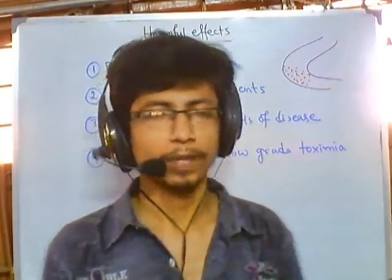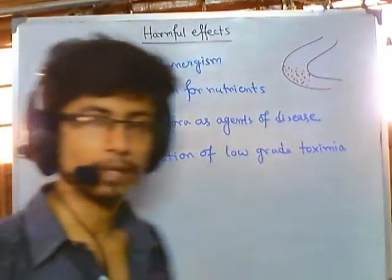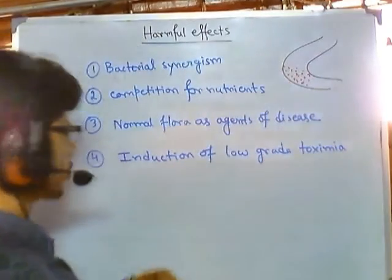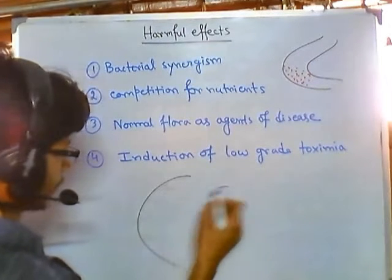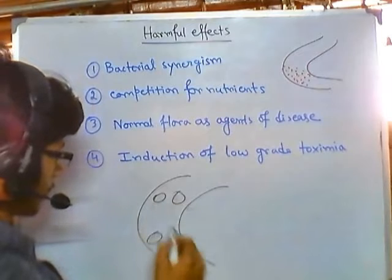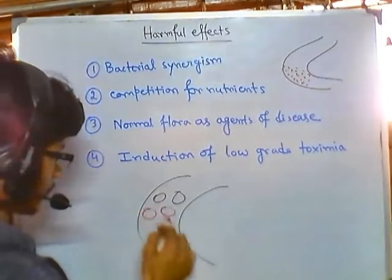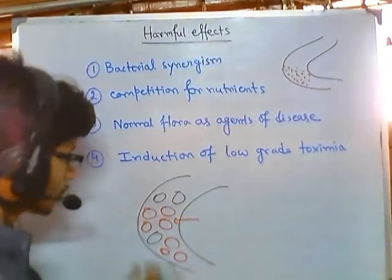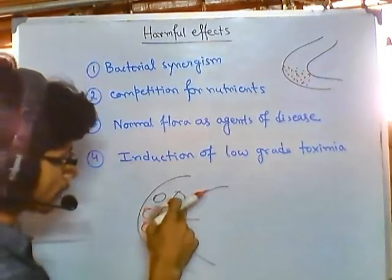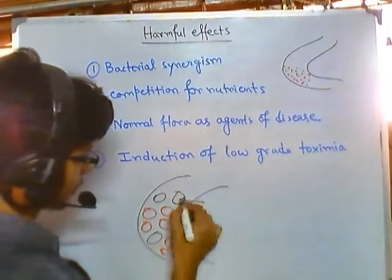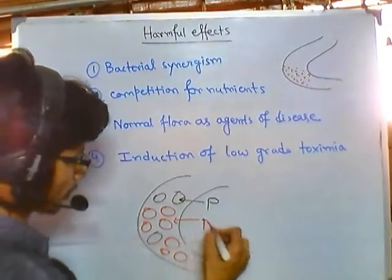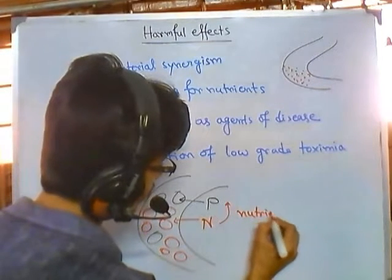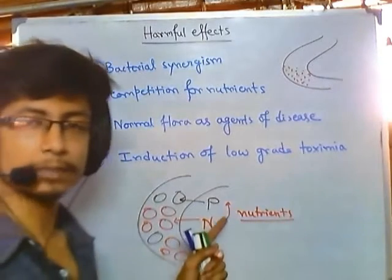I have listed four of them. The first is bacterial synergism. In our body there is a synergistic effect between two types of bacteria. For example, in this diagram, the black ones represent bad bacteria and the red ones represent good bacteria or normal microflora. There can be a synergism between this normal microflora and the pathogenic microflora, where they can share nutrients between them to help the pathogenic bacteria grow.